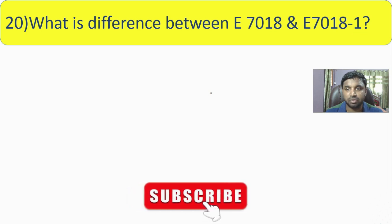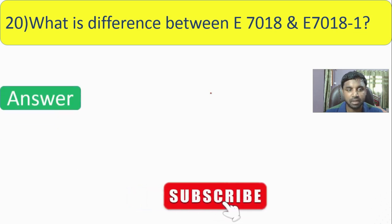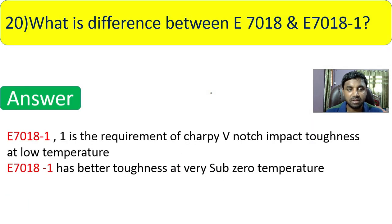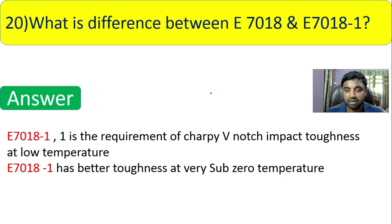Question 20: what is the difference between E7018 and E7018-1? The suffix '-1' indicates a requirement for Charpy V-notch impact toughness at lower temperatures. E7018-1 has better toughness at sub-zero temperatures, which is the special requirement indicated by the '1' designation.